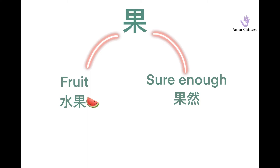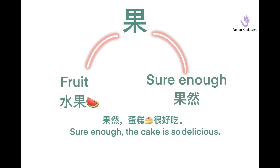Please repeat. 果然, 果然. For example: 果然, 蛋糕很好吃. Sure enough, the cake is so delicious. 蛋糕, cake. 很好吃, so delicious.